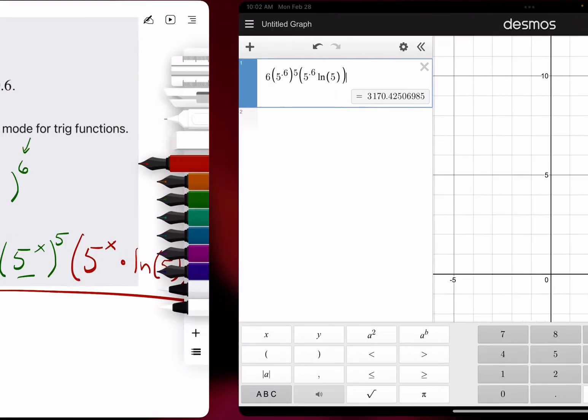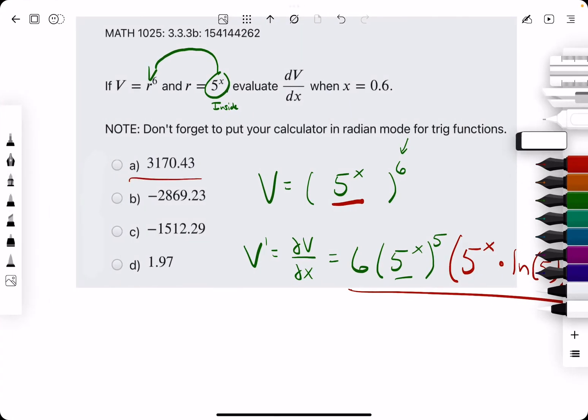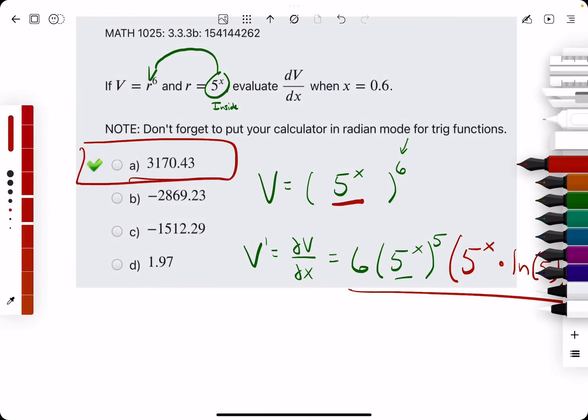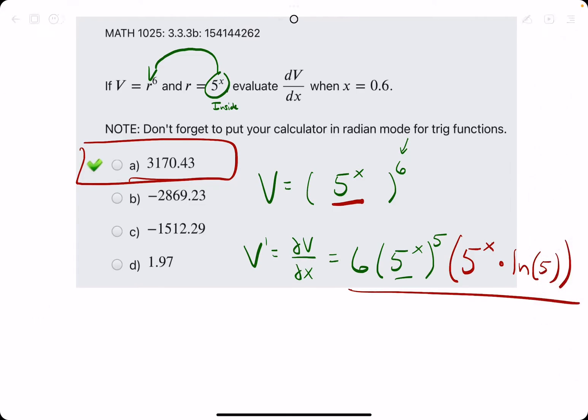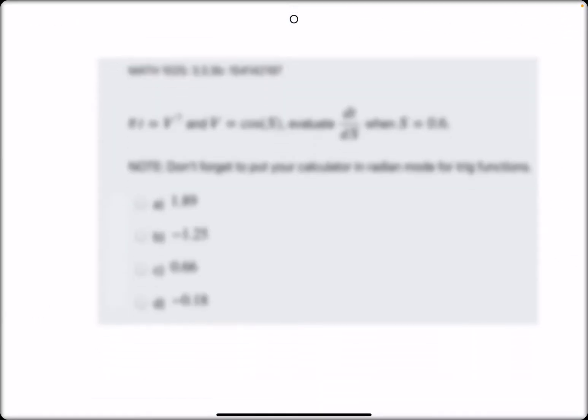So, we get 3170, looks like option A, we break out the eraser to see that A is our answer. Let's go ahead and do one more.